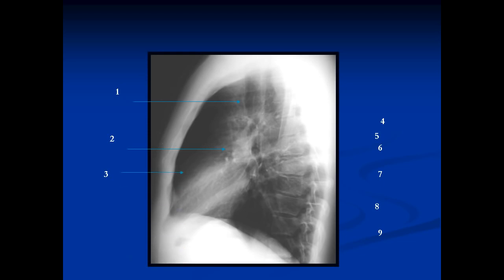The heart border on the lateral view that's in front is the right ventricle. It should be no more than about a third of the way behind the sternum — if it's bigger than that, then the right ventricle is enlarged. This white area here is formed by the arch of the aorta. This other white area here is the left pulmonary artery, which goes up and over the bronchus. This is the bronchus to the left upper lobe, which we see as a round hole end on. The pulmonary artery sits above it.